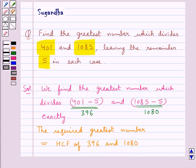By finding the HCF of the numbers 396 and 1080 we get the greatest number which divides 401 and 1085 leaving the remainder 5 in each case.